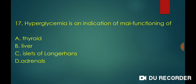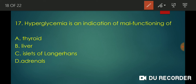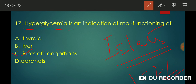Hyperglycemia is a condition of malfunctioning of which organ? Hyperglycemia is a condition where blood sugar level increases, caused by malfunctioning of the pancreas — specifically the islets of Langerhans. The islets of Langerhans are endocrine cells making up about one to two percent of total pancreas volume, discovered by German anatomist Paul Langerhans in 1869.